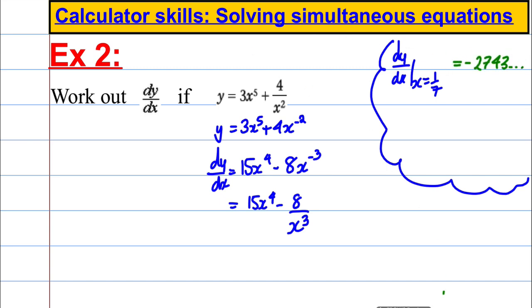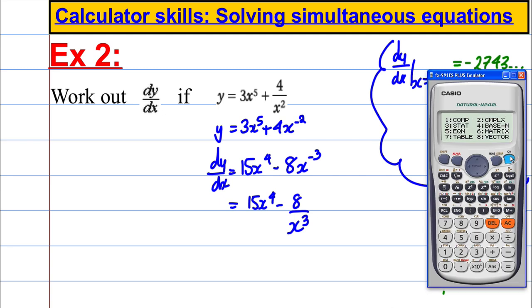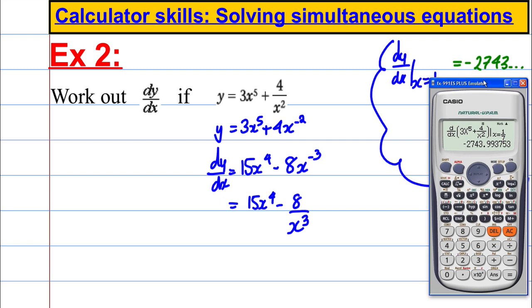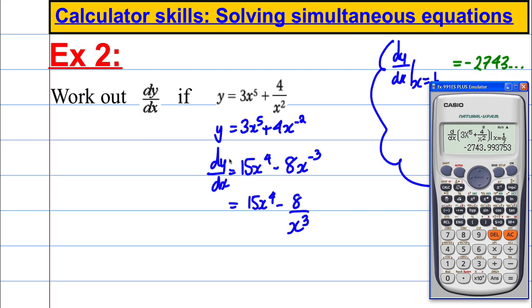Now let's get the calculator to perform the differential, the differentiation for us. So what we're going to do with the calculator, we're going to say let's d by dx, let's differentiate 3 alpha x to the power of 5 plus fraction 4 over x squared. And we're going to put x like a 7th as our check. Press equals, and we get negative 2, 7, 4, 3.99. We know then that when we worked out this, it must have been right.